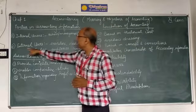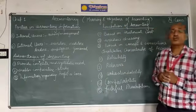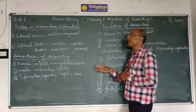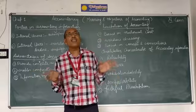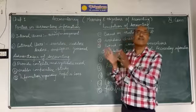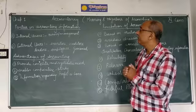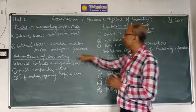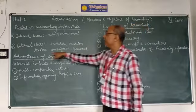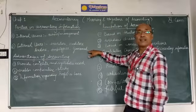The second type is external users. External users are those persons who are indirectly interested in the business, firm, or company. They are investors, creditors, lenders, employees, and government.